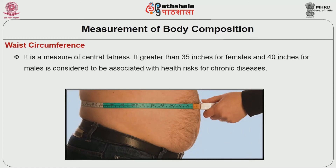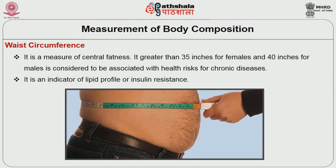Waist circumference is a measure of central fatness. Waist circumference greater than 35 inches for females and 40 inches for males is considered to be associated with health risks for chronic diseases. It is an indicator of lipid profile or insulin resistance.